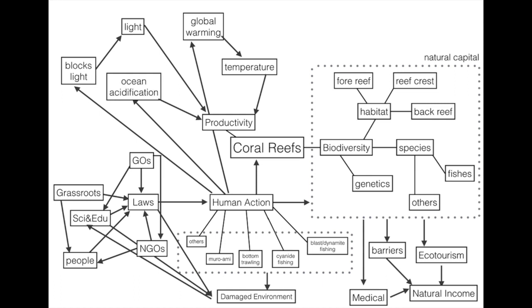Species diversity in communities is a product of two variables: (a) the number of species and (b) their relative proportions. In a coral reef, there are fishes, sponges, and many other species — too many to mention all of them.